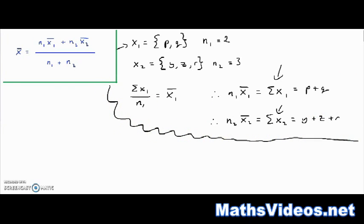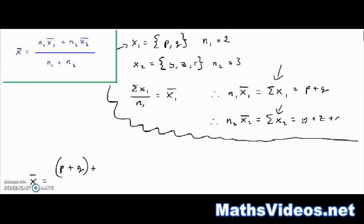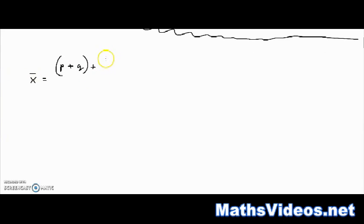Now, the combined mean of both of these sets of data is going to be equal to p plus q plus y plus z plus r over 2 plus 3, because there are two values in this set of data, p and q, and there are three values in this set of data, y, z, and r. So, this is going to be the mean of both sets of data combined.